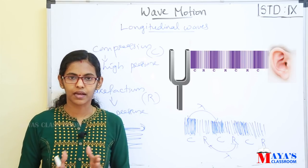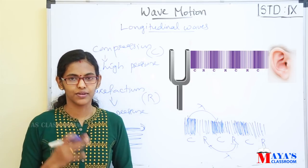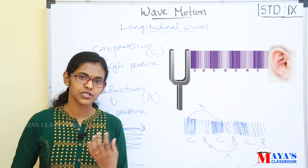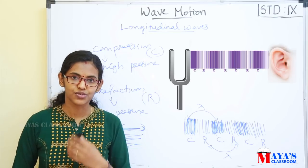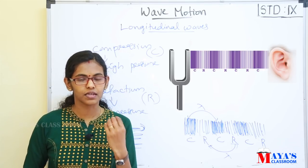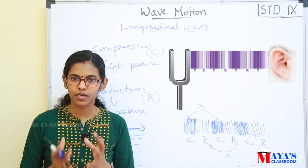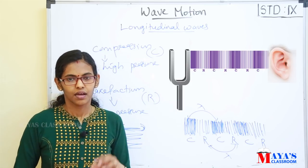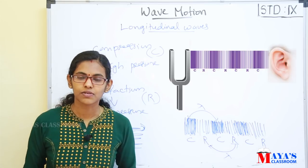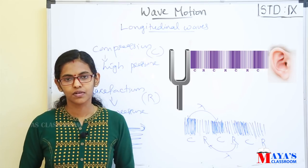Now let's compare transverse and longitudinal waves. Transverse waves: vibration is perpendicular to the direction of propagation. Longitudinal waves: vibration is parallel to the direction of propagation. Transverse waves have crests and troughs; longitudinal waves have compression and rarefaction. Transverse waves form on the surface of solids and liquids. Longitudinal waves form in solids, liquids, and gases. In transverse waves there is no pressure difference; in longitudinal waves there is a pressure difference. Light waves and radio waves are transverse. Sound waves are longitudinal.